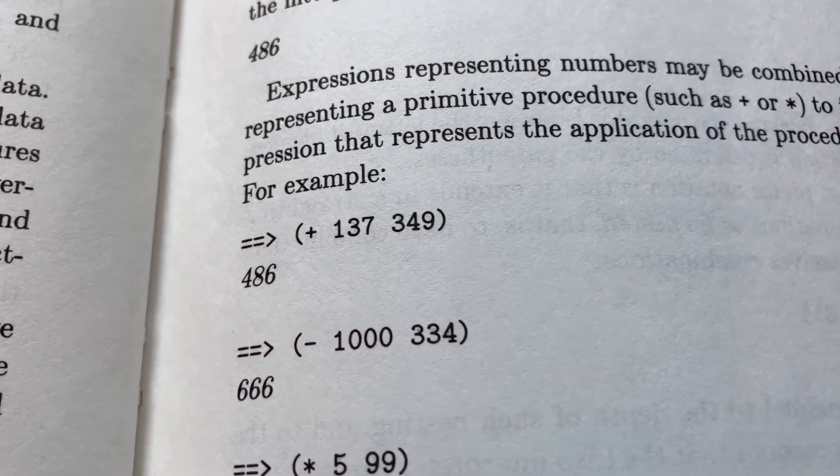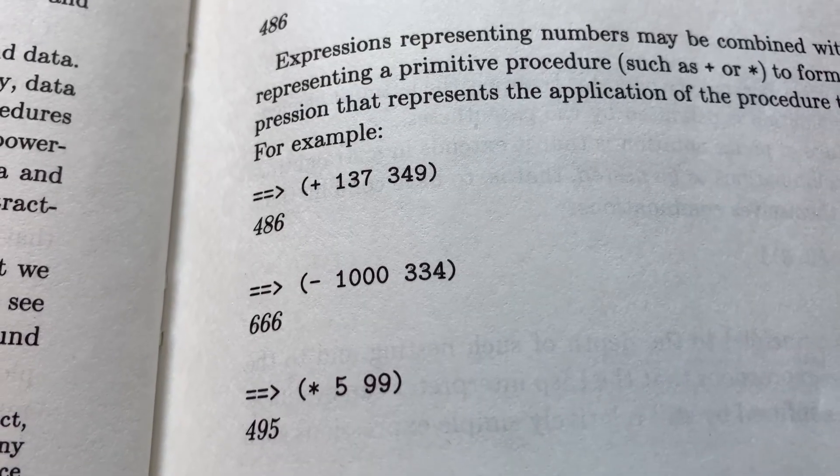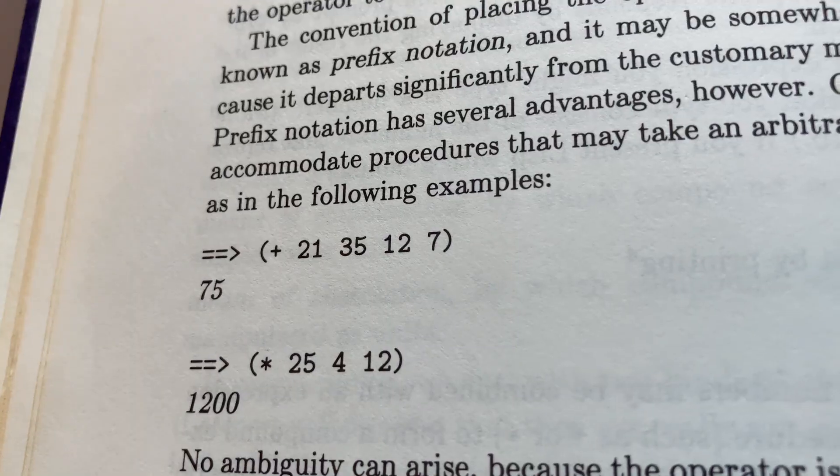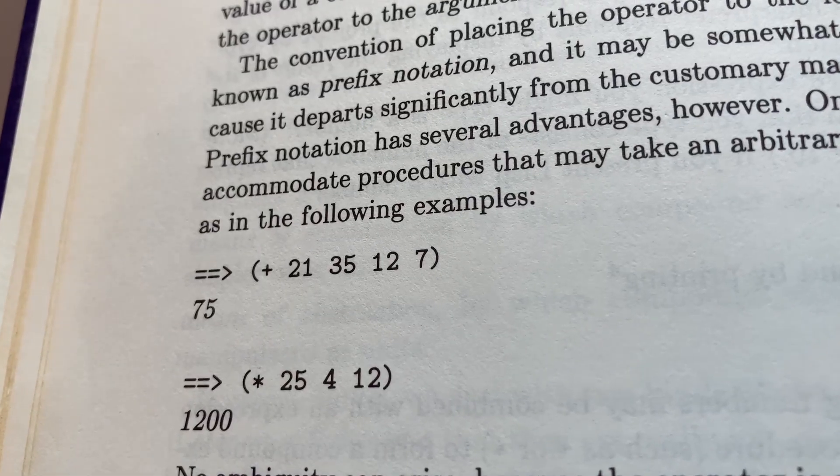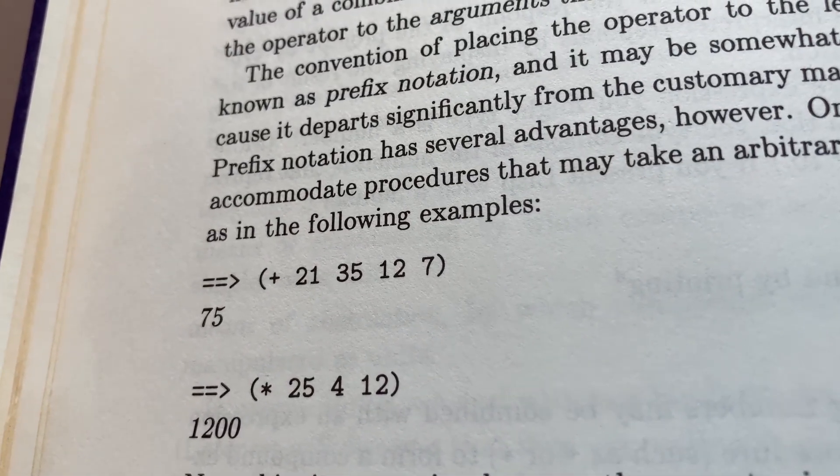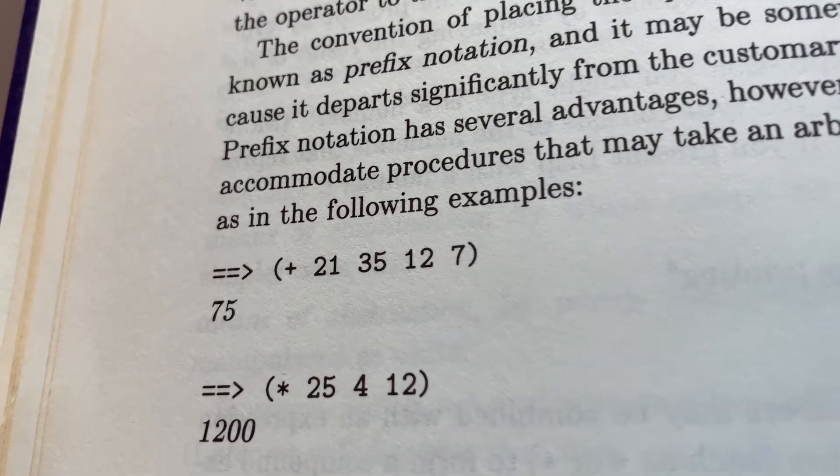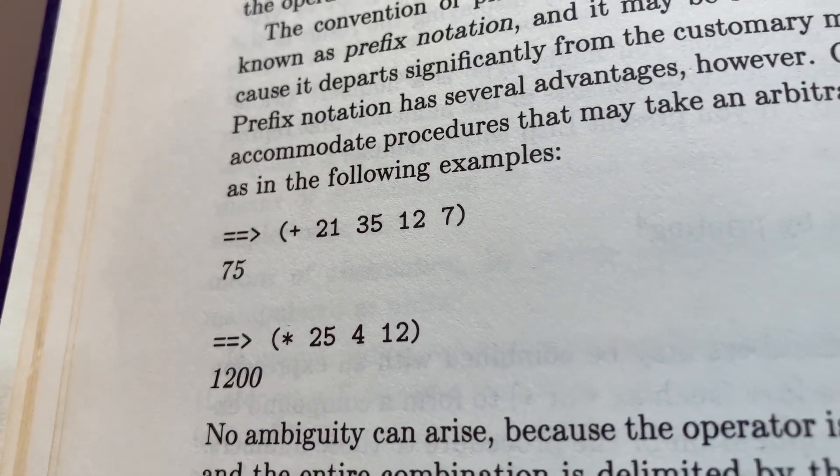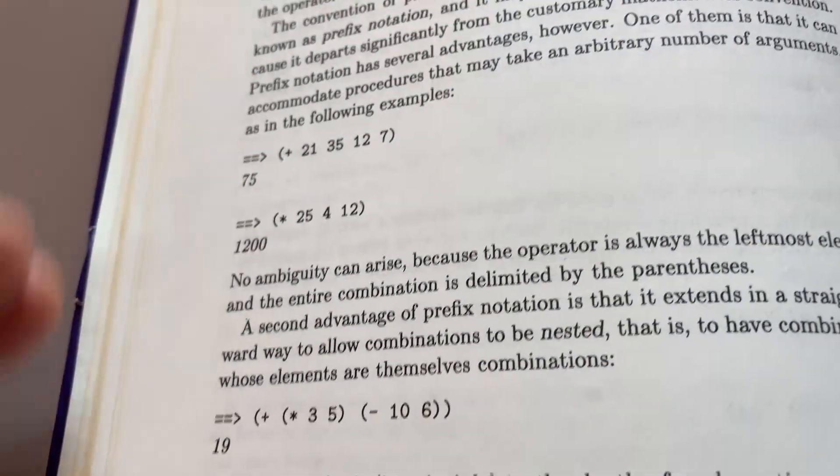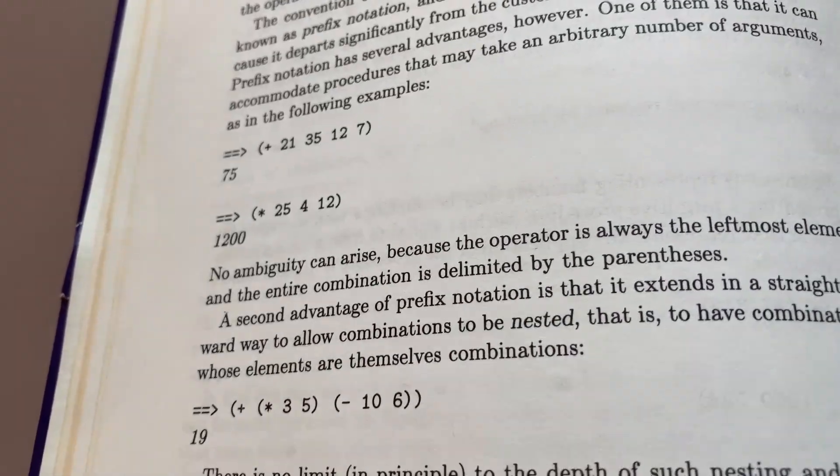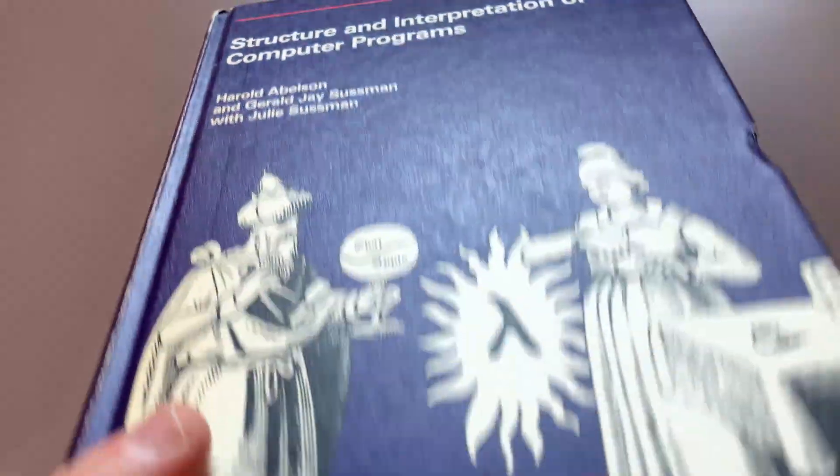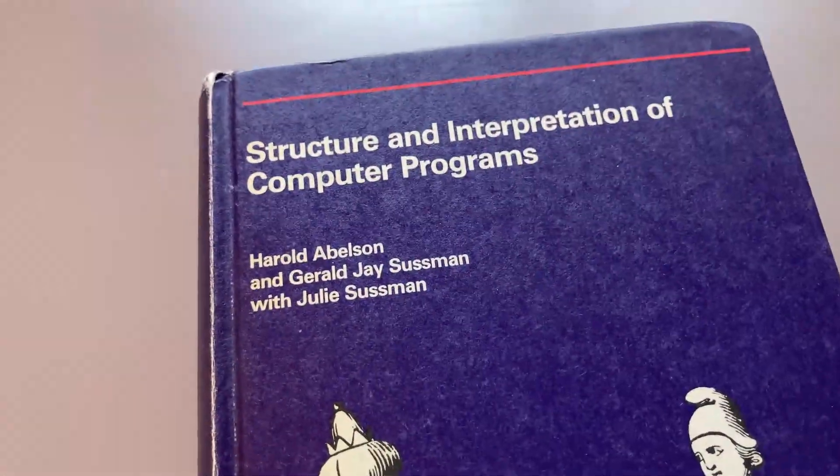You notice that there's a parenthesis, a plus sign, and then the 137, and then the 349. That basically adds the numbers 137 plus 349 and the result is 486. This is called prefix notation. So it's a little bit different than postfix, which is what we normally use as humans. Here is an advantage of this prefix notation: it's that we can use one plus sign, and then we basically add up all the numbers 21 plus 35 plus 12 plus 7 is equal to 75. And you can actually practice all of this on your computer when you install LISP. And again, I will leave links in the description so that you can get started with this right away.